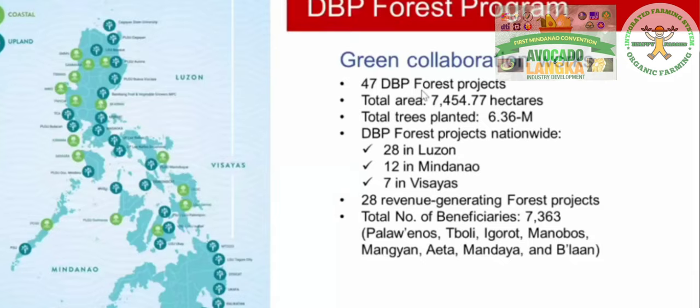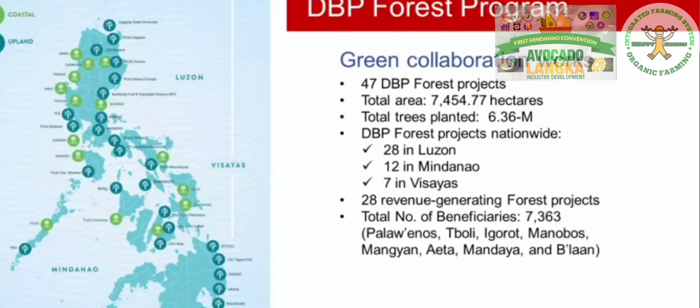Attesting to the effectiveness of our multi-sectoral collaboration to re-green the environment are 47 DBP forest projects with a total area of almost 7,500 hectares and a total of 6.36 million trees planted today. These DBP forest projects are located across the country — 28 in Luzon, 12 in Mindanao, and 7 in the Visayas. Of these, 28 are revenue-generating and we hope more will follow soon.